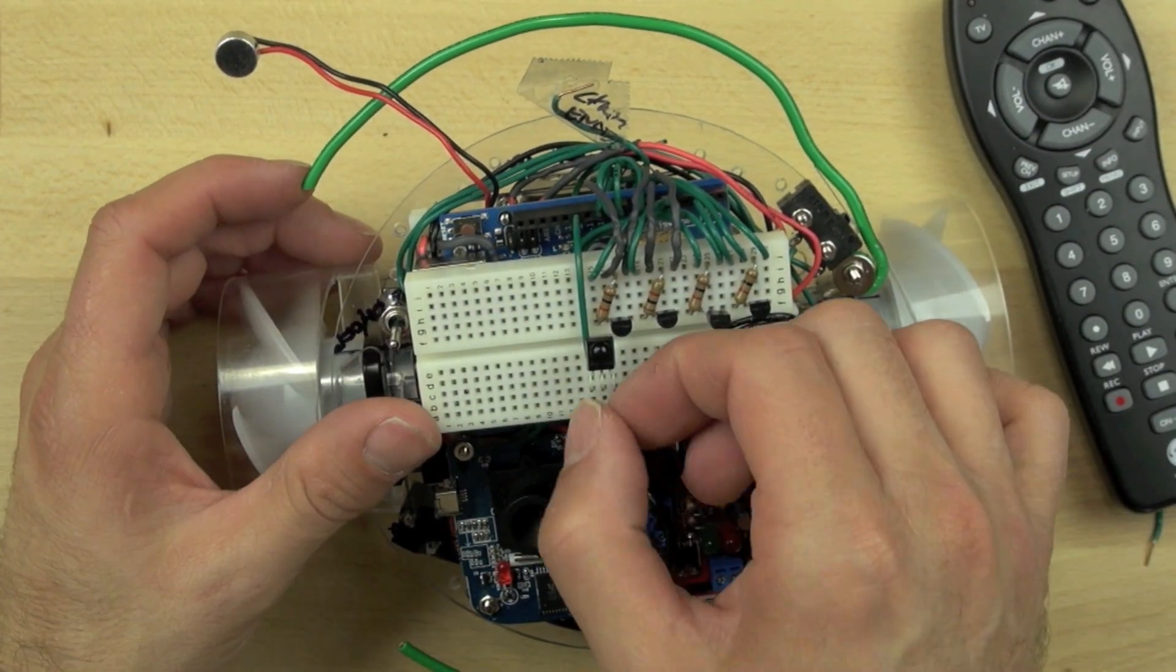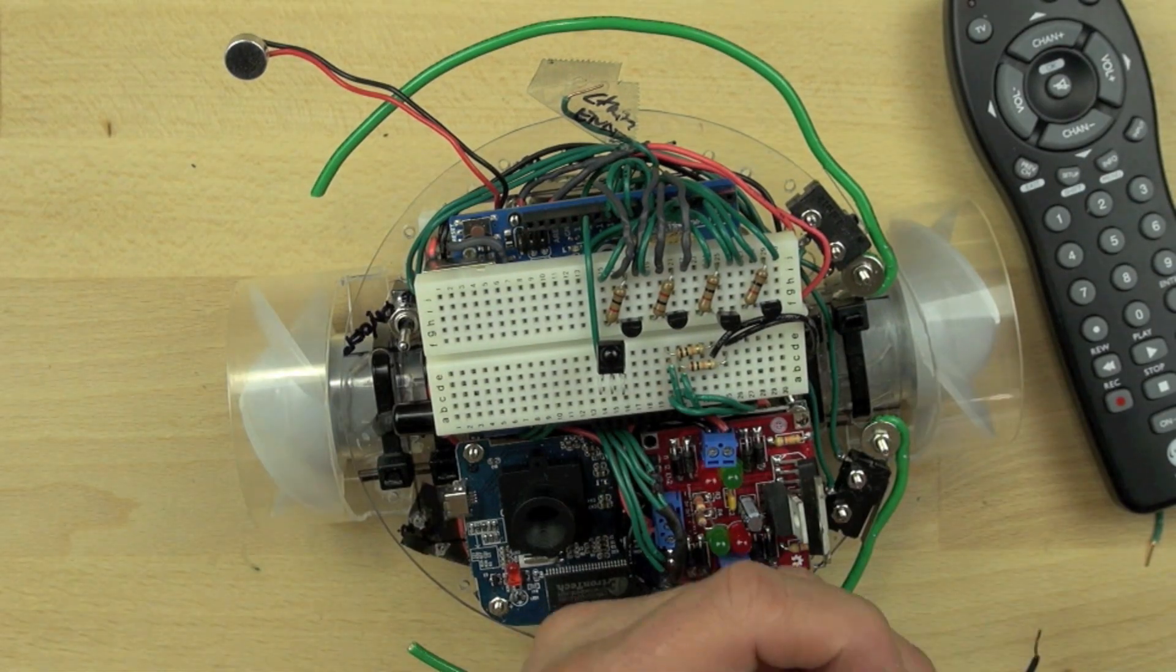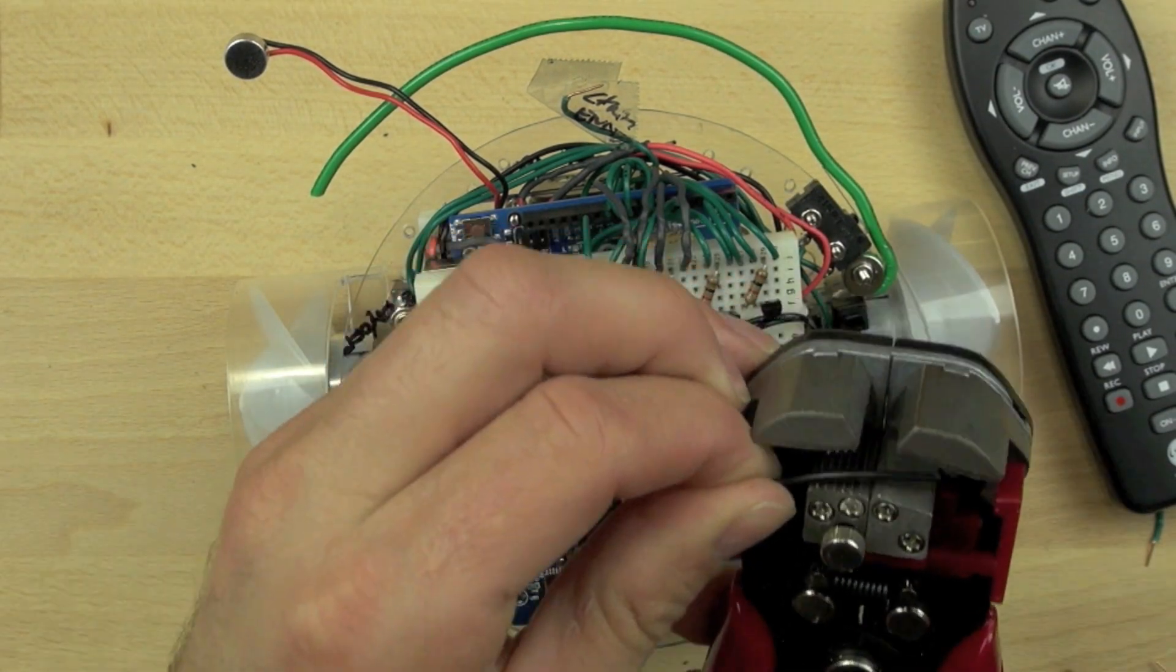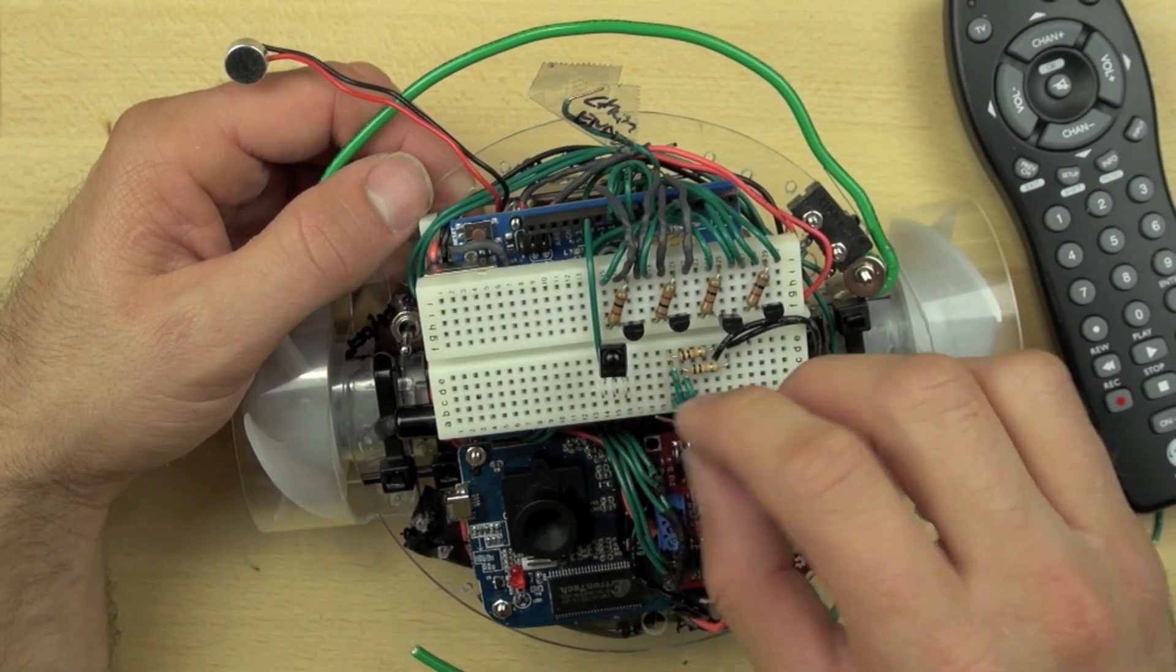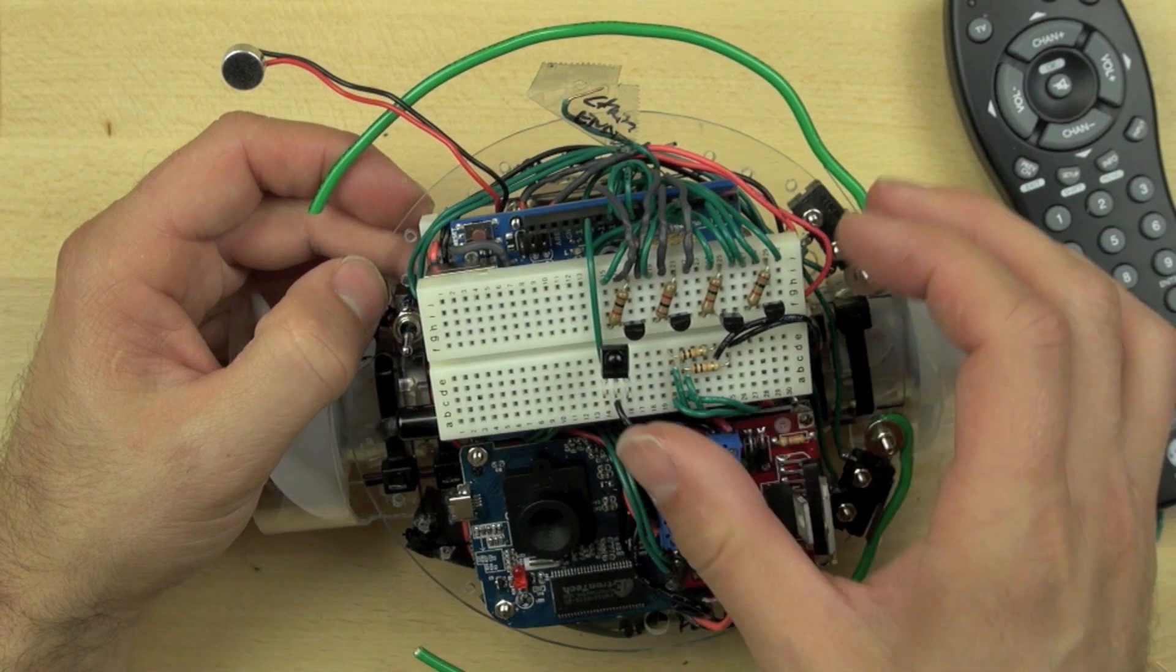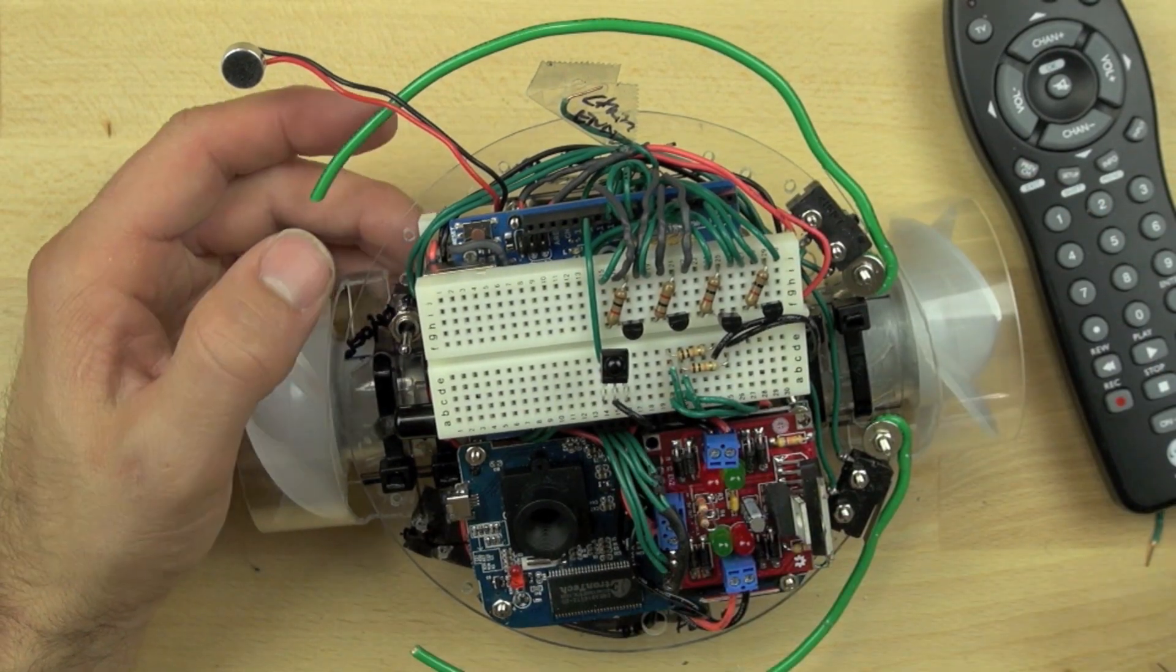We've got a ground pin there on our Arduino, on the front side of our Arduino, and we're just going to run that black wire, which is our ground wire, to that ground on our Arduino. We're just sizing the wire, and that goes to the center of our IR receiver module.